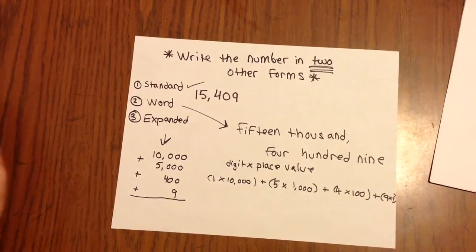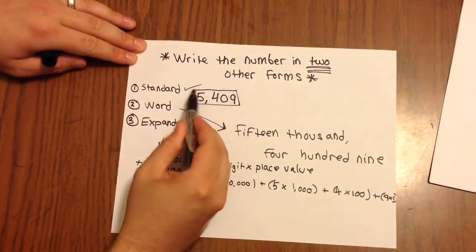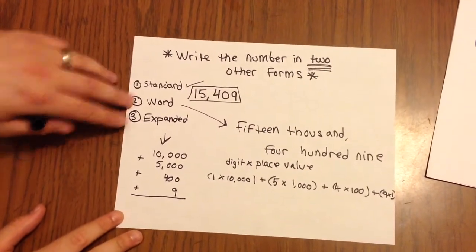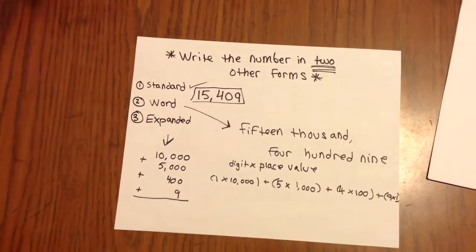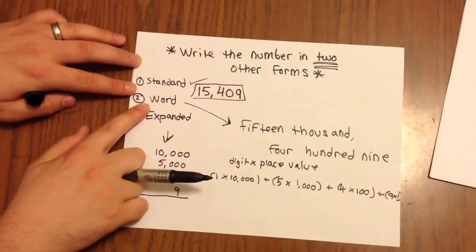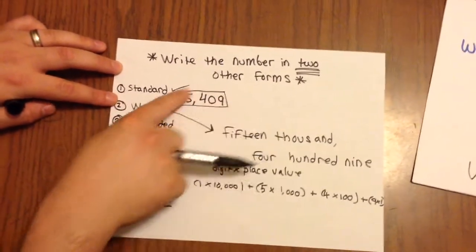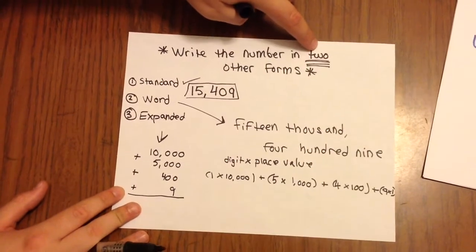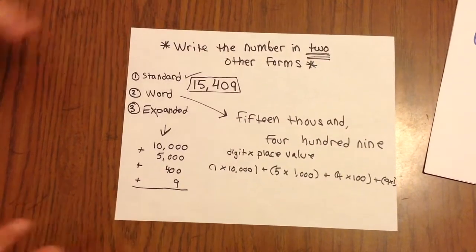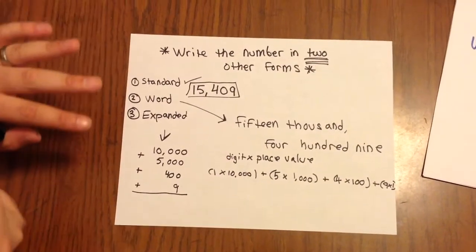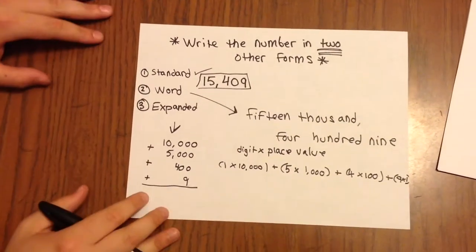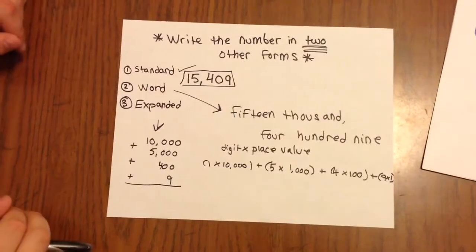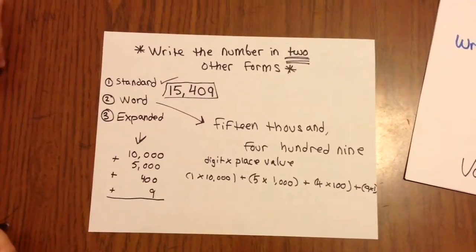So when you see a problem like this, first check and see, okay, what form is the number they gave me in? If it's in standard form, I need to write the number in word form and expanded form. But let's say they gave you the word form of the number. Well, if they started out by giving you the word form of this number, then you would have to write the standard form and the expanded form. So make sure you're writing the two other forms that the problem doesn't give you. So I hope this made some sense. Again, we're going to continue working on this in class tomorrow. And if you have any questions, please let me know about them tomorrow. Thank you, and I hope you guys have a good night working on your homework.